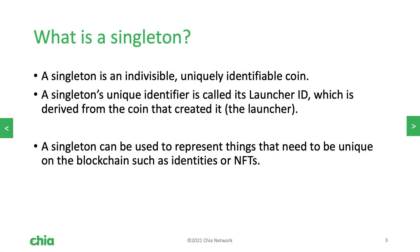The first question you may have is: what is a singleton? A singleton is an indivisible, uniquely identifiable coin. The singleton's unique identifier is called its launcher ID, which is the coin ID of the coin that created the first singleton in this singleton's history. Singletons can be used to represent things that need to be unique on the blockchain, such as identities or NFTs.